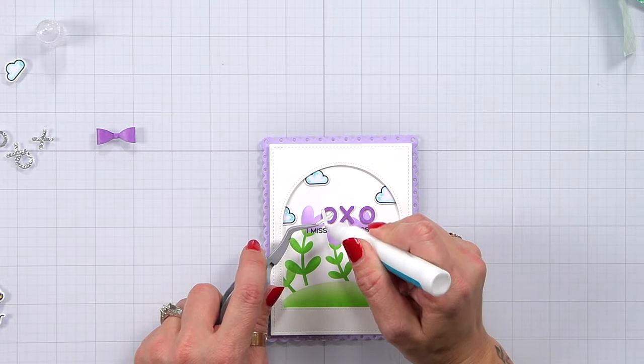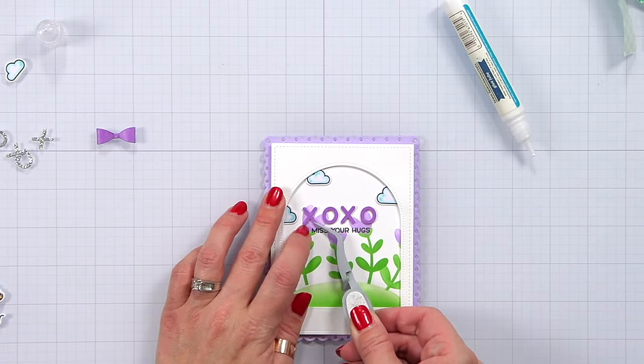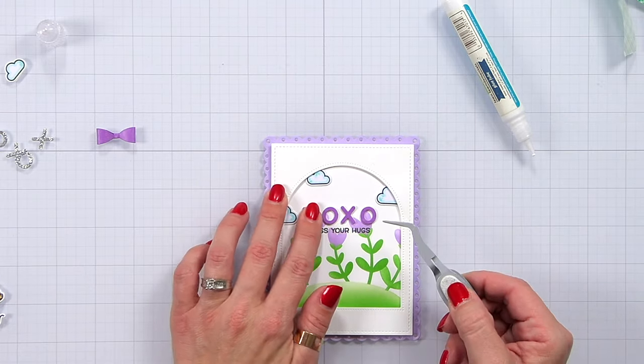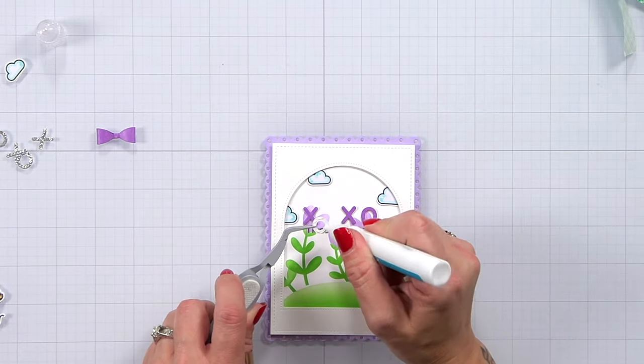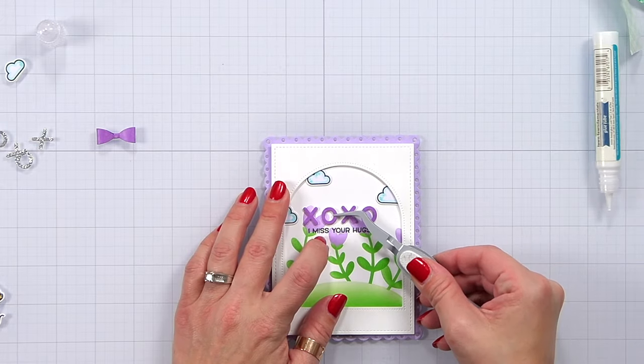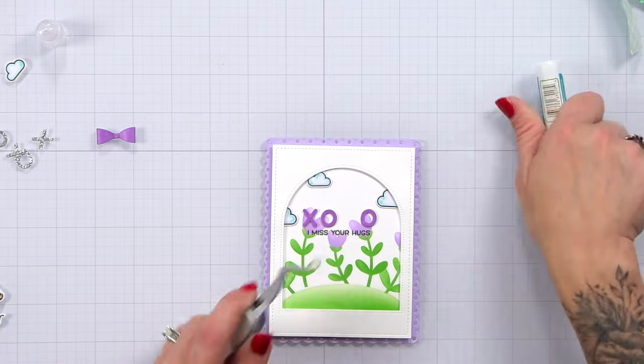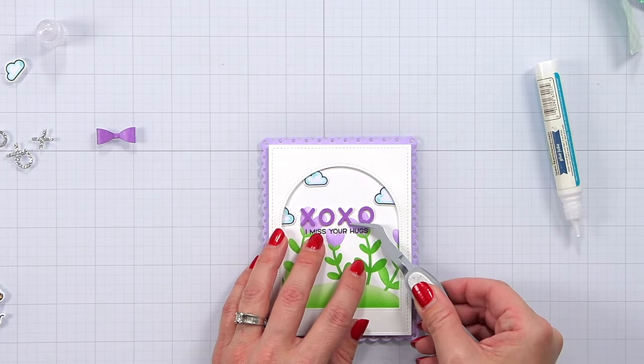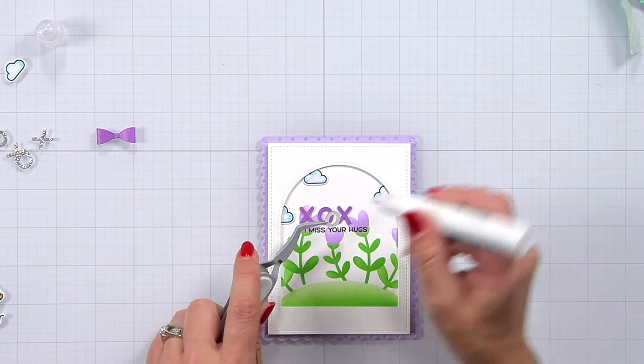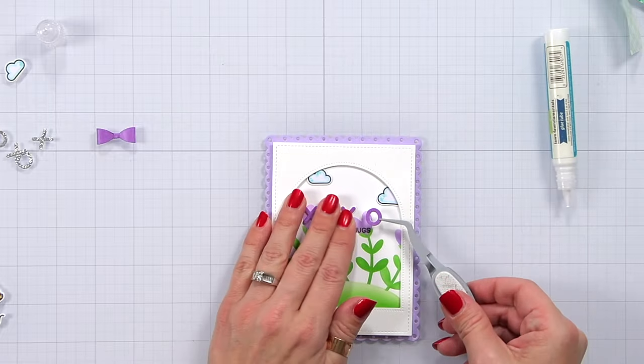Then I can add in the additional sentiment the XOXO. I lined it up and spread it out. I don't think I lined up my stamped sentiment perfectly so I'm hoping that I'm distracting your eye with the XOXO. I'm going to try and space that out so it looks centered but I was off just a little bit.